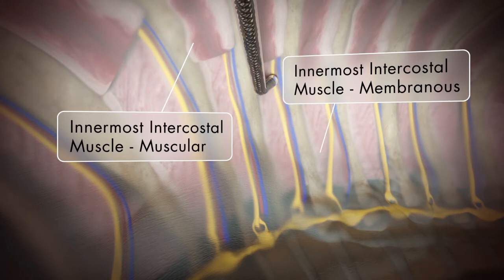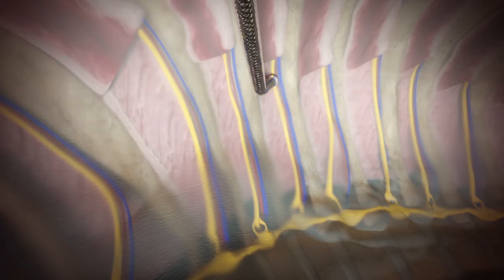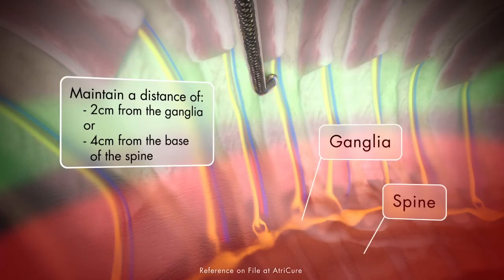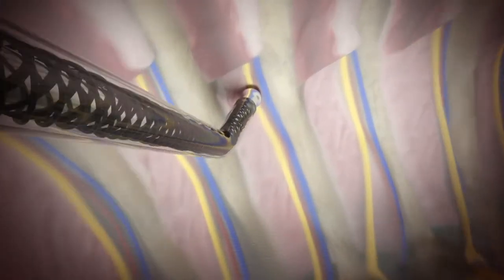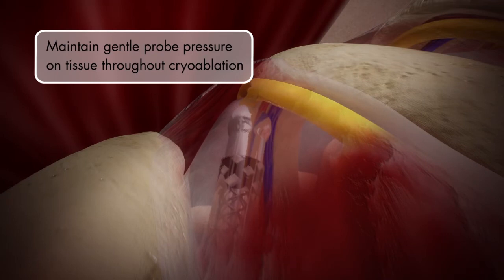Choose a location that is proximal to the lateral cutaneous branch but at least two centimeters from the ganglia and four centimeters from the spine. Gentle probe pressure should be applied throughout the cryo ablation cycle.